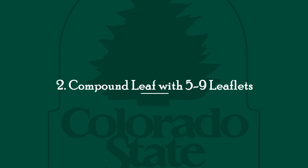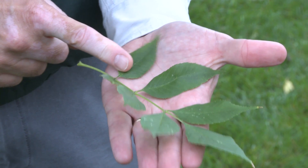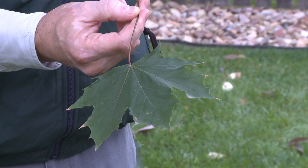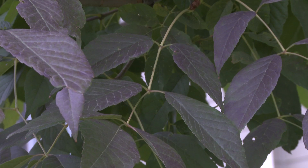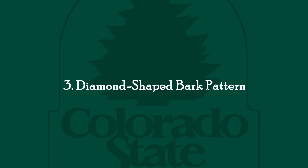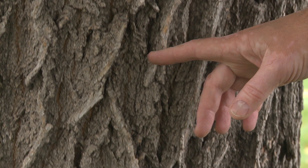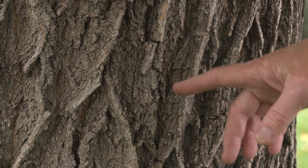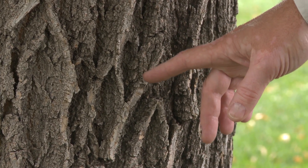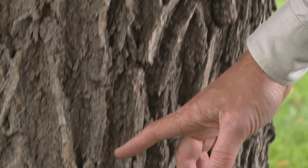The ash has a compound leaf, generally with five to nine leaflets per leaf, whereas the maple is a simple leaf. So it's easy to determine an ash tree from a maple when the leaves are on the trees. The other thing to look for is a pattern in the bark. On mature ash trees, we're going to find a diamond-shaped pattern that develops on both white and green ash trees, whereas on maple trees we won't see that pattern in the bark.